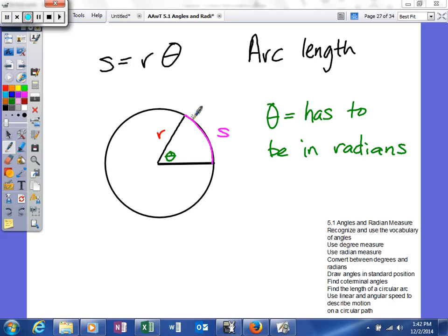Where S is our arc length, so S is basically the length around the outside of the circle. It's basically a percentage of their circumference, so kind of keep that in mind. R is your radius, and then theta is your angle.